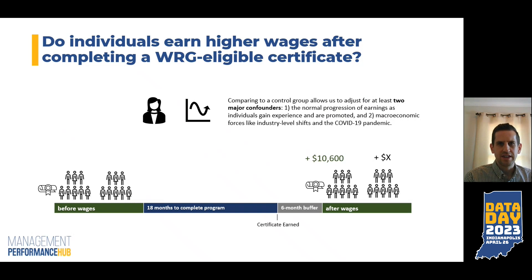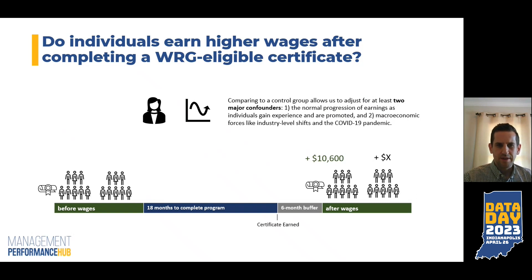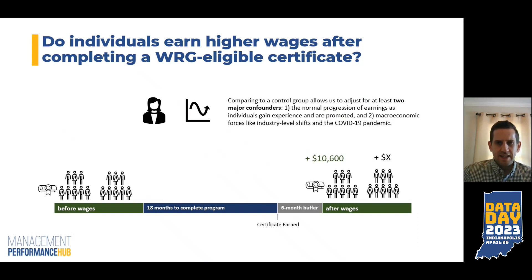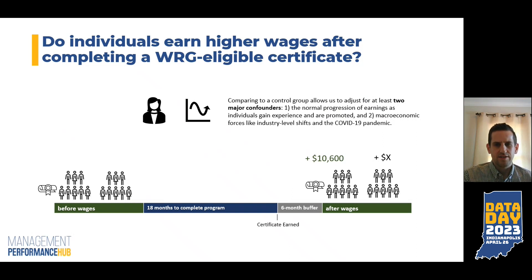The first confounder is just the normal progression of earnings you'd expect individuals to see as they gain experience at a particular employer or in an industry — maybe they're promoted or move into a different job. There's a two-year gap between our before wages and after wages, so you'd expect some wage growth over that time period. The second major confounder is larger macroeconomic forces, like industry-level shifts, the COVID-19 pandemic, and broader social forces that could lead someone to earn more or less — unrelated to their education.